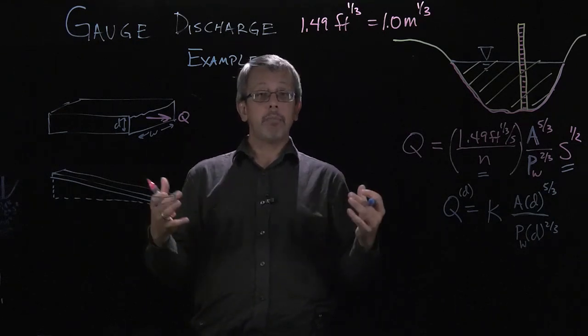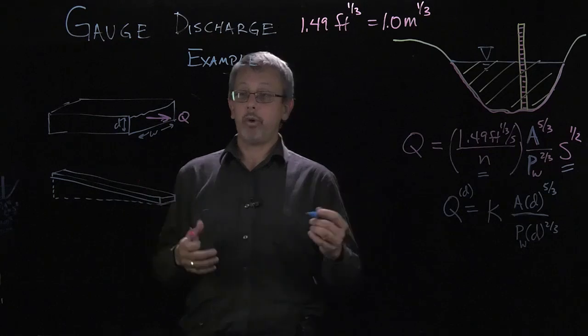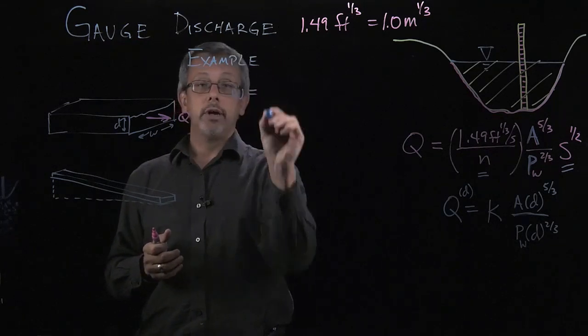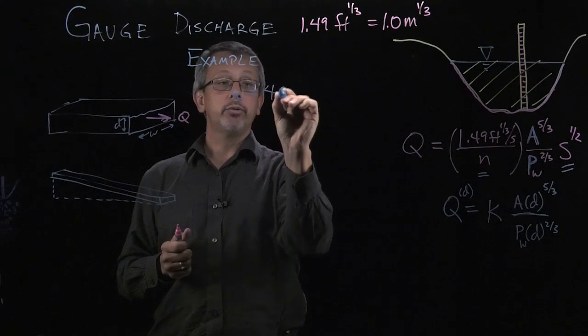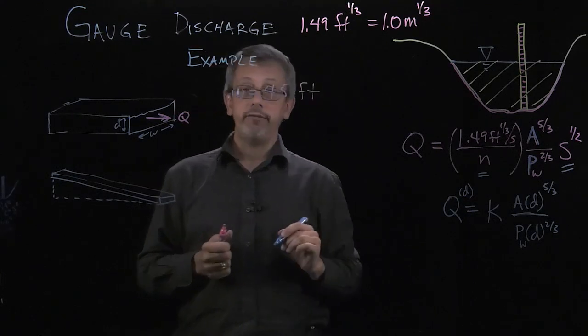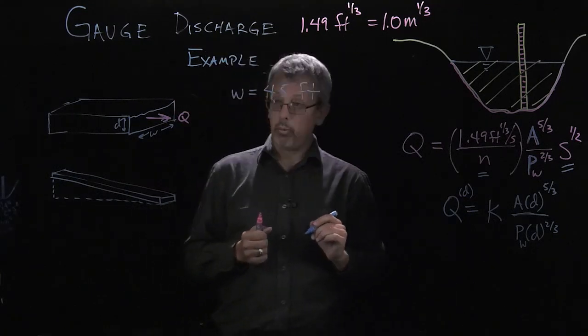In order to know that we're going to need some information about the geometry of the raceway. Here we have a width of the raceway. We're given a value of 45 feet for the width of the raceway.